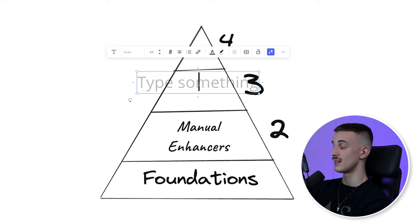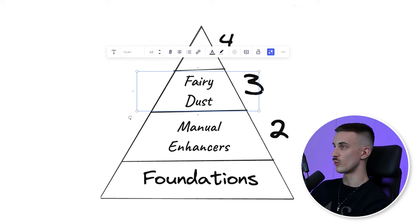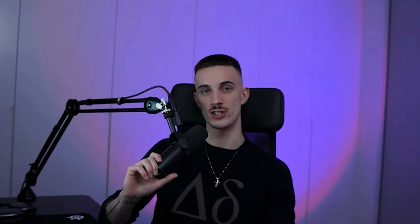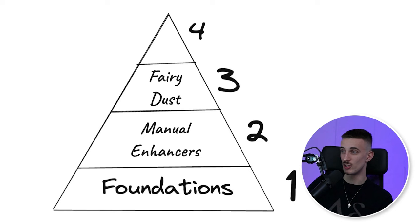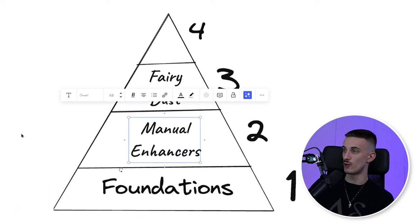And then you can go into the fairy dust — this is what everyone is so excited about online. This is where you can start exploring AI personalization and all these different strategies. There are a bunch of great tools; for example, Clay has been crushing it. It's a bit more expensive, but that's why you need to have the first two levels dialed in first, so your campaign economics actually support using a tool that costs a lot of money.